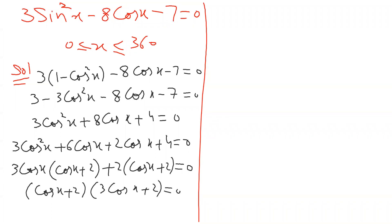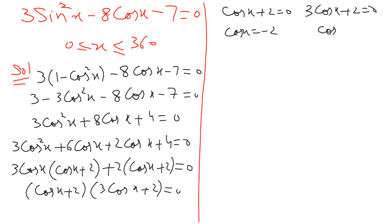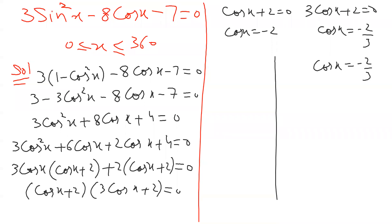So without assuming K, this is another and easier way. Setting each factor to zero: (cosine x plus 2) equals 0 gives cosine x equals negative 2. And (3 cosine x plus 2) equals 0 gives cosine x equals minus 2 by 3. Stop here — for cosine x equals negative 2, write: no real solution.